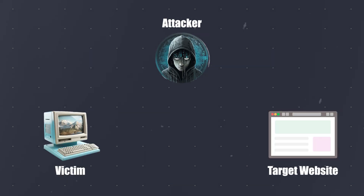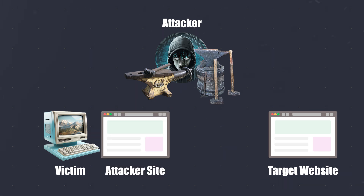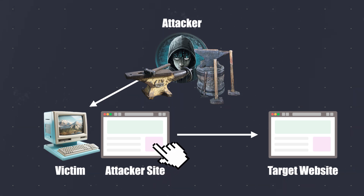First, an attacker crafts, or forges, a request with an unintended user action to a website. Next, the attacker embeds the request into a hyperlink and sends it to visitors who may be logged into the site. When the victim clicks the link inadvertently, the forged request is sent to the target website. Finally, the website validates the request and performs the action with the victim's account.